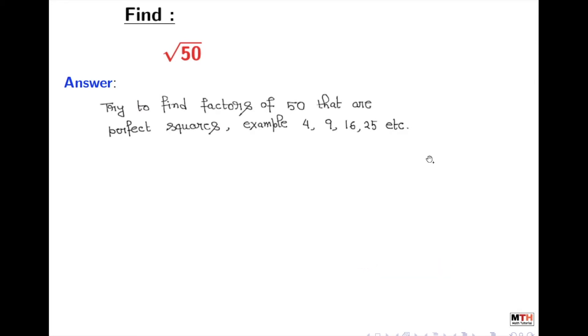For example, 4 which is square of 2, 9 square of 3, 16 square of 4, 25 square of 5, etc. So let's find that kind of factor, and 50 can be written as 25 times 2.